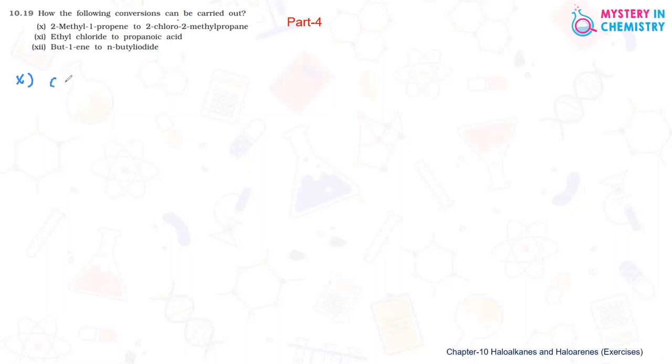2-methyl-1-propene means three carbon atoms with a double bond. Propene indicates the double bond is here, with remaining hydrogens. This is the structure of 2-methyl-1-propene, the starting compound. Now it should be converted to 2-chloro-2-methyl-propene.